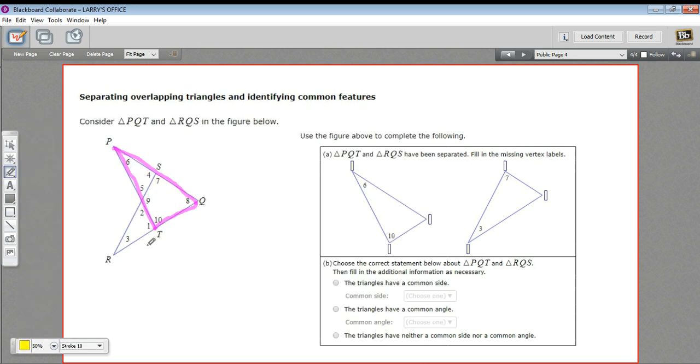And then triangle RQS. Okay, so there are our two triangles. Let's see what we can do with labeling the vertices. If you get confused about the orientation, look for the number of the angle. Here we have angle 6 by vertex P. So this is P, this is T at angle 10, and this is Q because this first triangle is PQT.